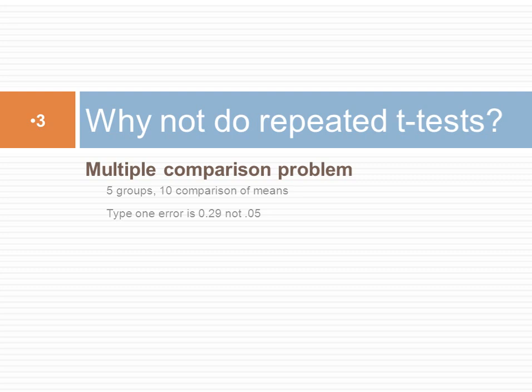If you're making comparisons between five groups, you will need about 10 comparisons of means. When the null hypothesis is true, the probability that at least one of the 10 observed significance levels is less than 0.05 is about 0.29, nearly one-third. In other words, there's a 29% chance that at least one test will yield a significant result, even when the null hypothesis is in fact true. This is not right, and therefore we shouldn't do repeated t-tests.